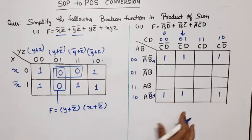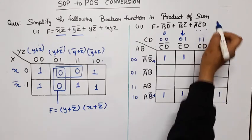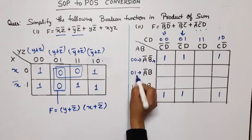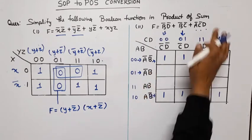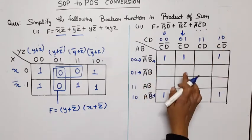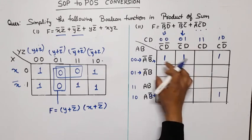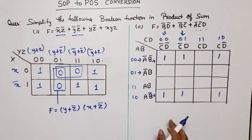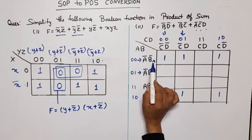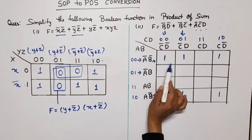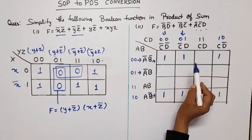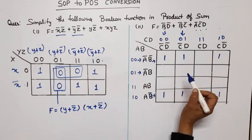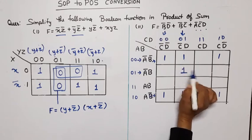We use both rows because both rows are ā, and the column is c̄d̄. Since there was already a one in the first row, we only add the new one here. This completes the SOP plotting.